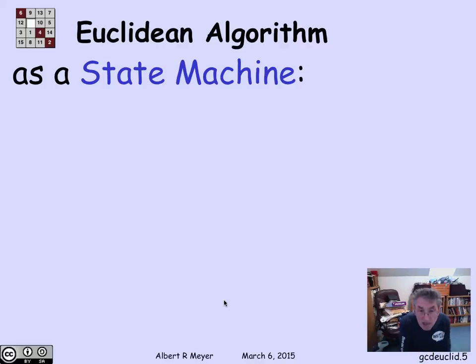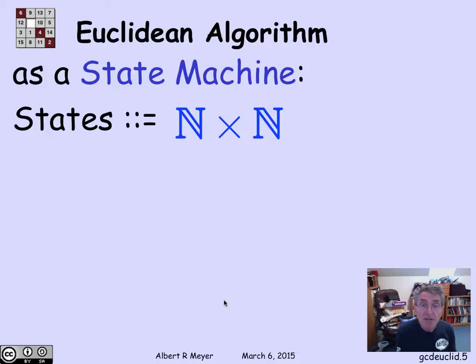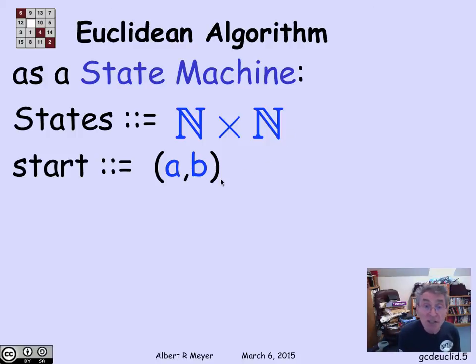It's a good exercise in state machine thinking and practice in program verification to reformulate the Euclidean algorithm explicitly as a state machine. It's a very simple kind of state machine. The states will be pairs of non-negative integers. So the states are n cross n, the Cartesian product of the non-negative integers with itself. The start state is going to be the pair a,b, whose GCD I want to compute.